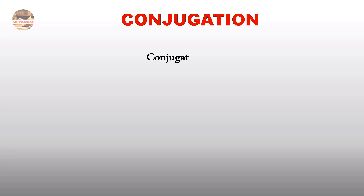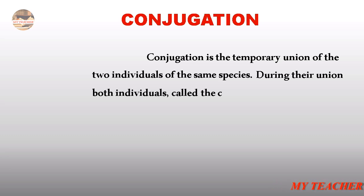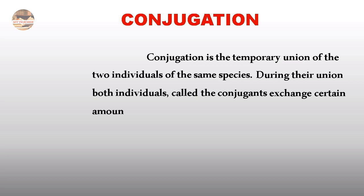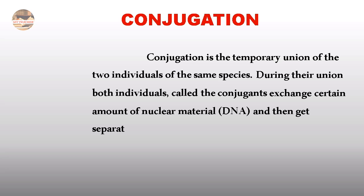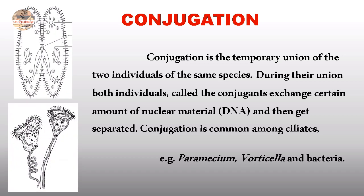The second type of sexual reproduction is Conjugation. It is a temporary union of two individuals of the same species. During their union, both individuals called conjugants exchange a certain amount of nuclear material — that is, DNA — and then get separated. Conjugation is common among ciliates. Examples are Paramecium, Vorticella, and Bacteria.